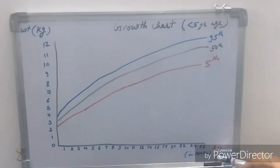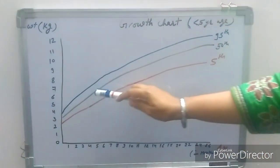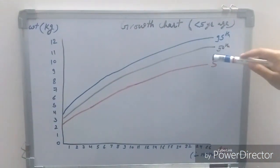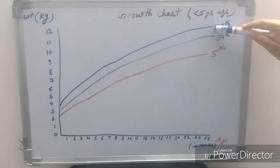On the x-axis age in months is plotted. At any time of visit, weight of the child should fall between 5th to 95th percentile.